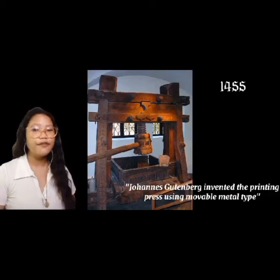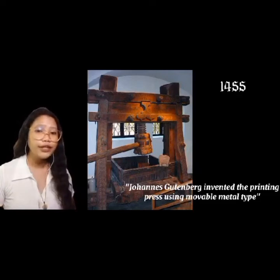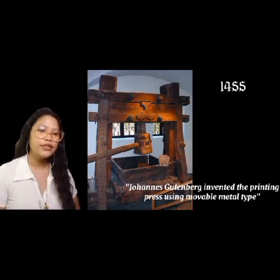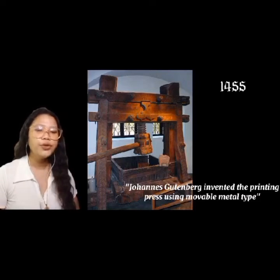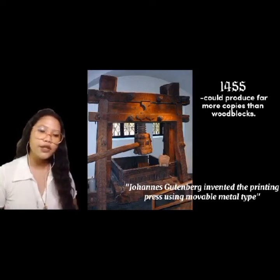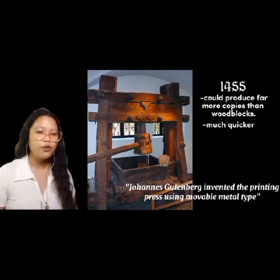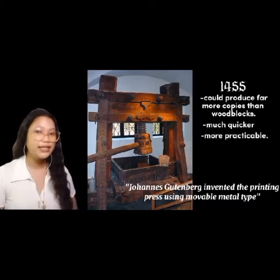Let's go to the year 1455, where Johannes Gutenberg invented the printing press using movable metal type. Around 1450, Gutenberg created his own printing system using a hand-operated printing press and metal movable type, which could produce far more copies than woodblocks with less deterioration. It is also a much quicker method than the earlier use of a woodblock for each page. The relatively limited number of Western alphabetical letters made movable type more practicable than it was with thousands of Chinese characters.